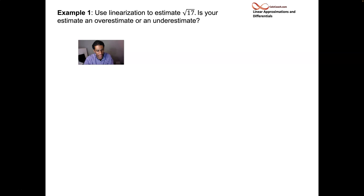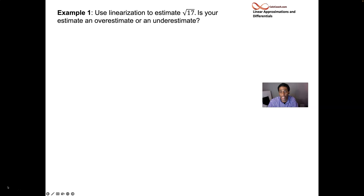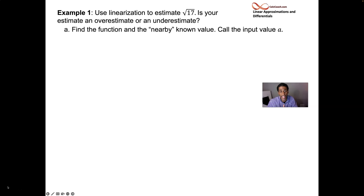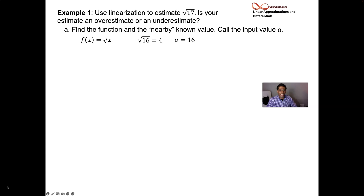Let's see an example. We know that the square root of 17 is close to the square root of 16, and we know the square root of 16 is definitely 4. So this number should be something close to 4 — our job is to figure out if it'll be more than or less than 4. We're going to use linearization to estimate the square root of 17 and determine if our estimate is an overestimate or underestimate. Step one: find the function, find the nearby value we know, and call that input x equals a. Our function is the square root of x, the nearby value is the square root of 16, making a equal to 16.